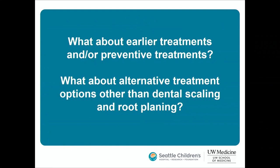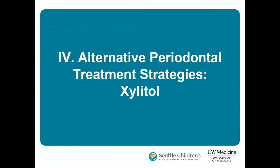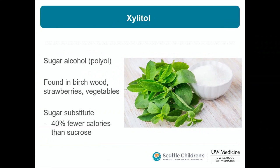This leads us to xylitol. Xylitol is a naturally occurring sugar alcohol found in birchwood, strawberries, vegetables, and chewing gum. It's just as sweet as sucrose but has 40% fewer calories, which has made it popular in foods and beverages. Importantly, it actually prevents Streptococcus mutans — the bacteria that causes cavities — from growing.